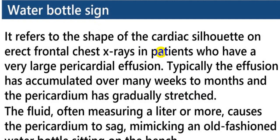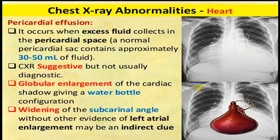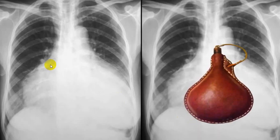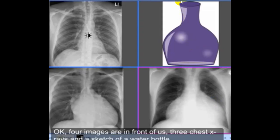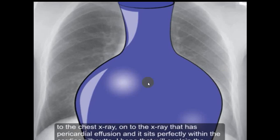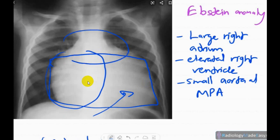The water bottle sign is characteristic of massive pericardial effusion — the cardiac shadow looks like a water bottle. Whenever you see such a massive rounded cardiac shadow, always think of pericardial effusion. This is the water bottle sign.